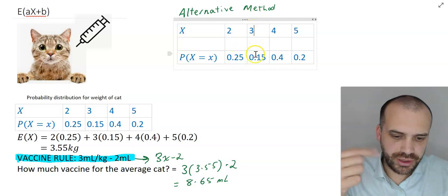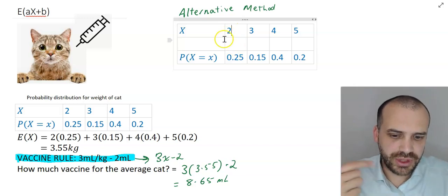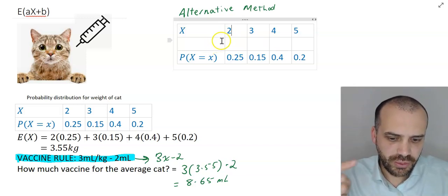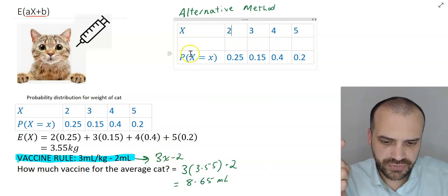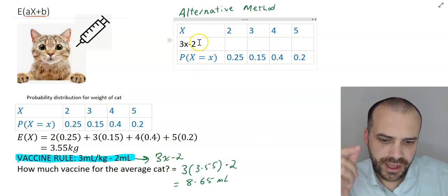Now if this cat weighs 2 kilograms, what vaccine would that cat receive? Well, we would just substitute it into this formula, 3x minus 2. Now 3x minus 2, if I sub 2 into 3x minus 2, I'll get 3 times 2, which is 6, minus 2, which is 4.